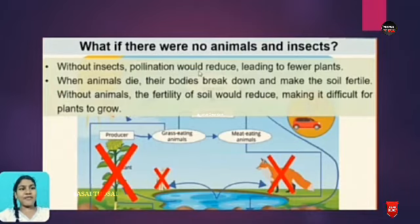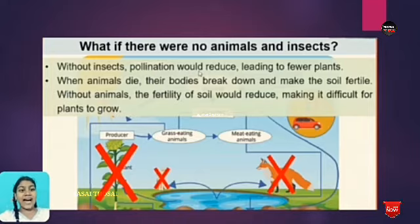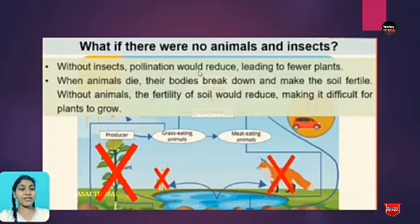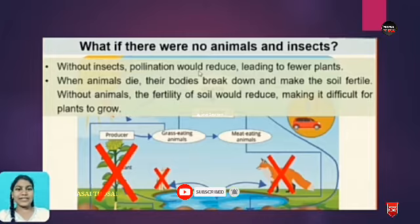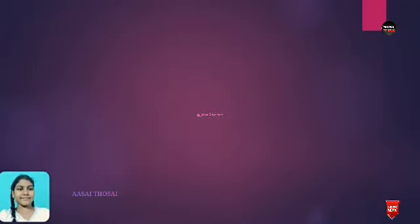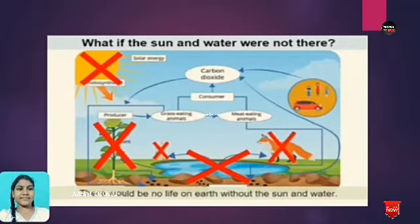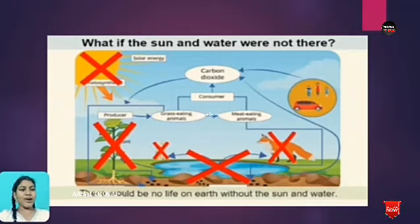What if there were no animals and insects? Without insects, pollination would reduce, leading to fewer plants. When animals die, their bodies break down and make the soil fertile. Without animals, the fertility of the soil would reduce, making it difficult for plants to grow. Without the sun and water, there would be no life on earth.